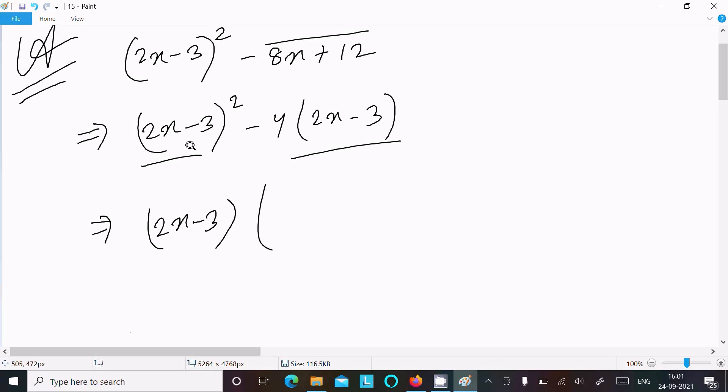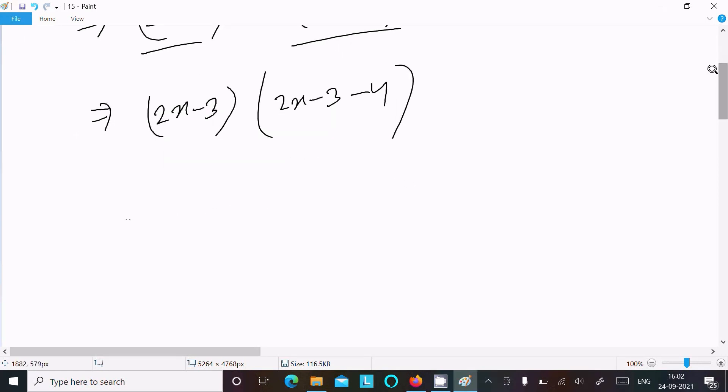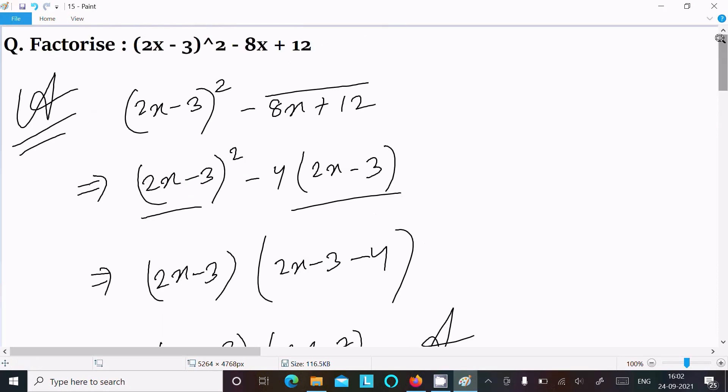So 2x-3 is the common factor. Here you can get 2x-3 and this -4. Now thereafter, 2x-3 and 2x-3-4, that is 2x-7.